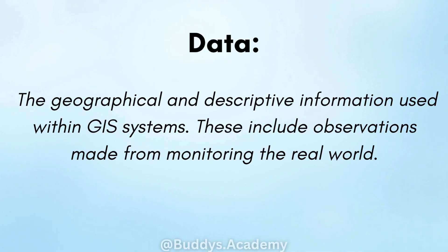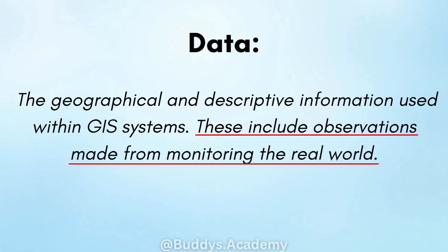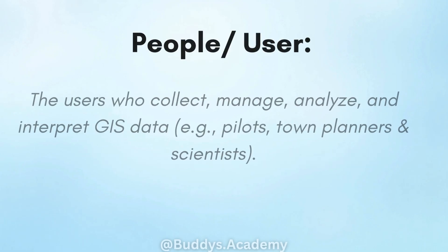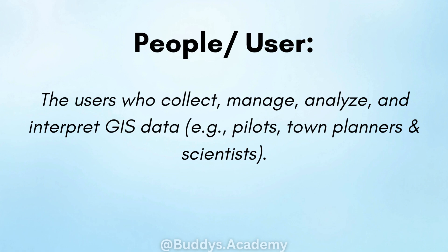Data: this is the geographical and descriptive information that is used within your GIS systems. These include observations made from monitoring the real world. The second part of this definition is the most important part. People: these are the users who collect, manage, analyze and interpret your GIS data. Examples of people would be pilots, town planners and scientists.